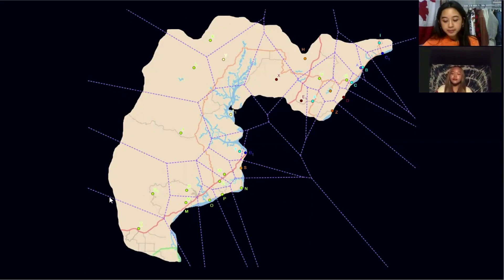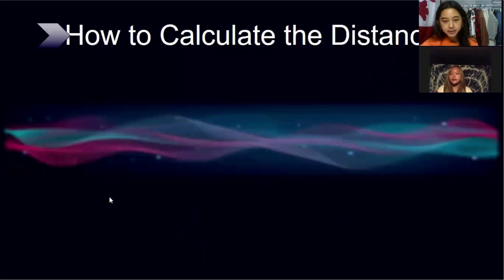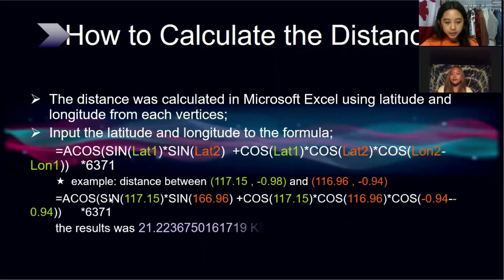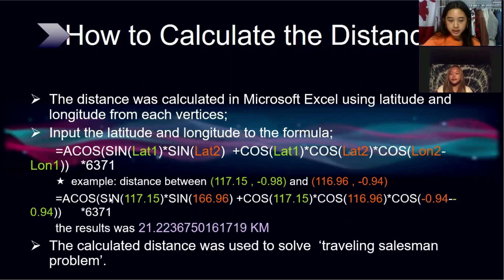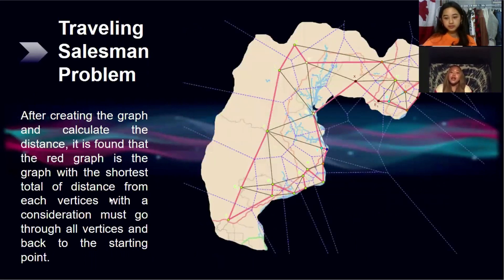After that, we built a weighted graph. Once the weighted graph was built, we calculated the distance. Through trial and error, we got the distances to solve the Traveling Salesman Problem. After creating the graph and calculating the distance, it is found that the red graph is the graph with the shortest total distance from each vertex, with the consideration that it must go through all vertices and return to the starting point.